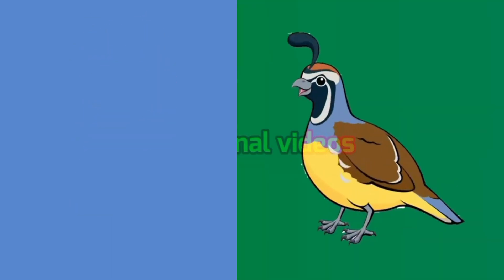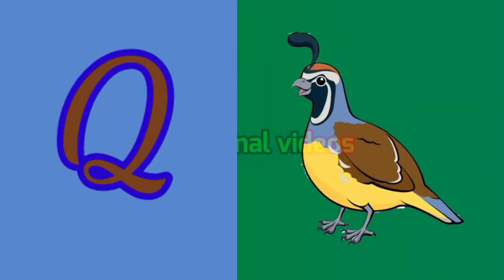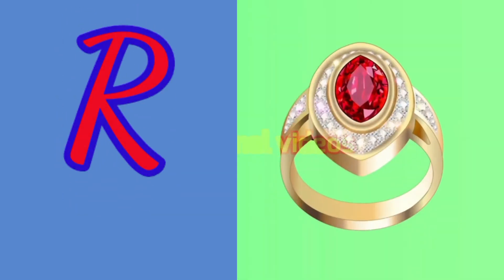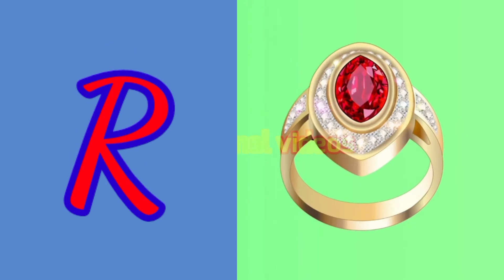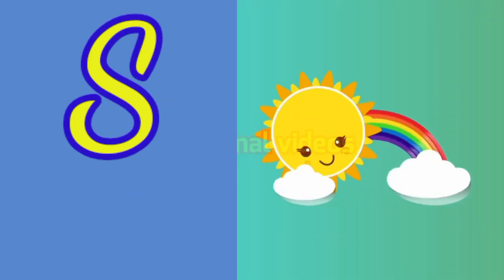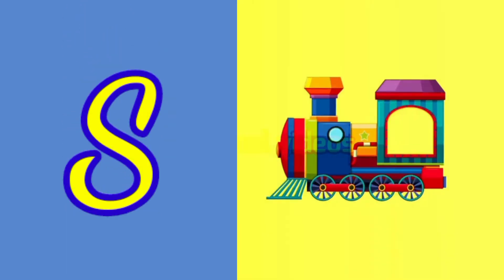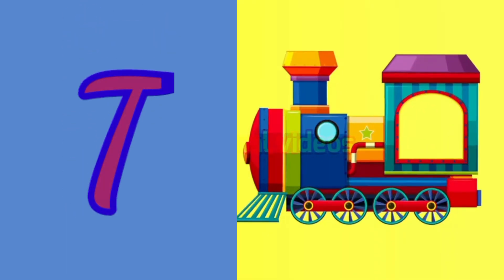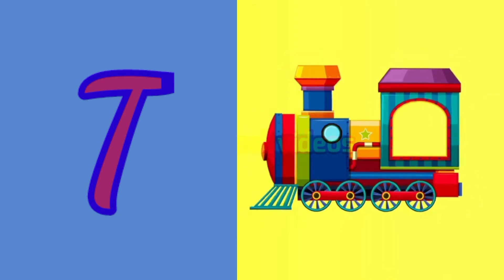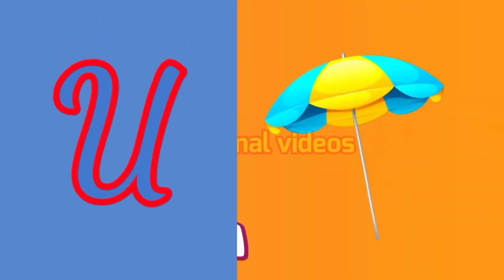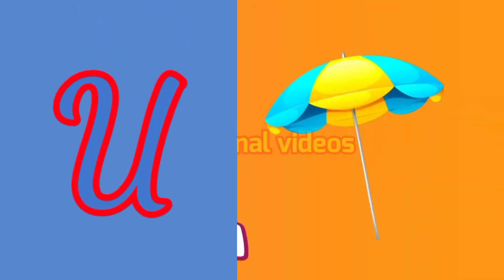Q for Quail, R for Ring, S for Sun, T for Train, U for Umbrella.